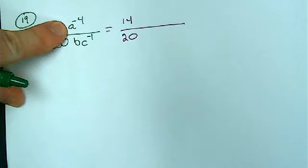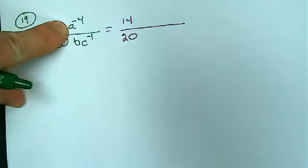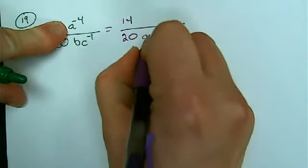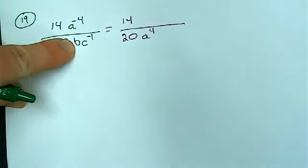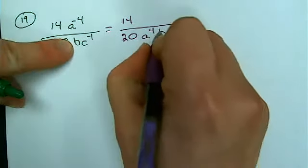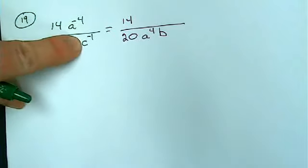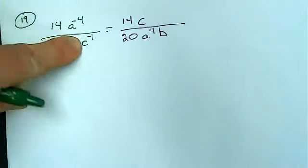A to the negative 4 does what? Goes down, becomes A to the fourth in the denominator. B stays in the denominator, and then C to the negative first moves up, becomes a positive 1, which I don't need to write.